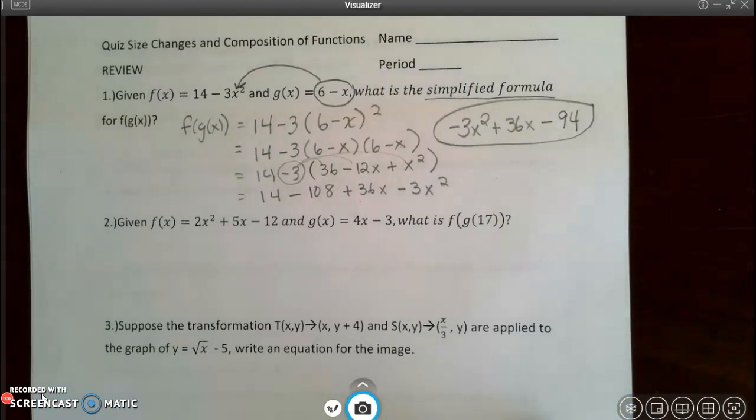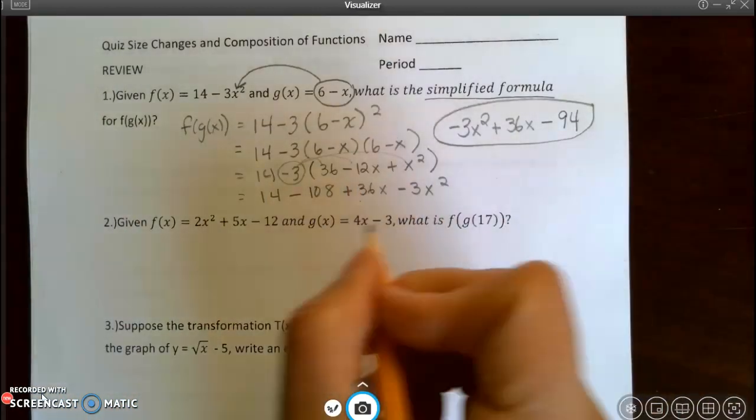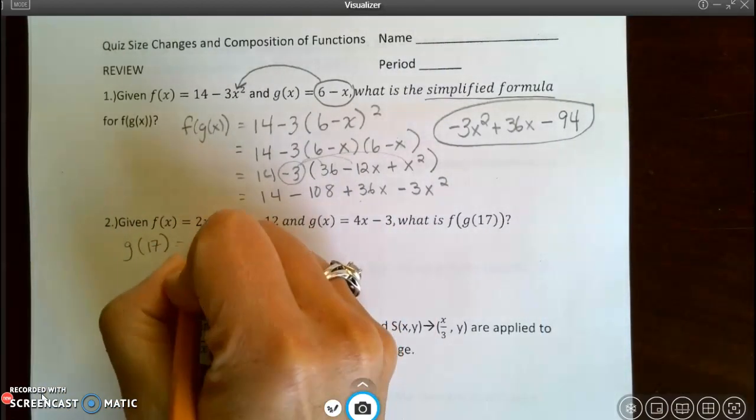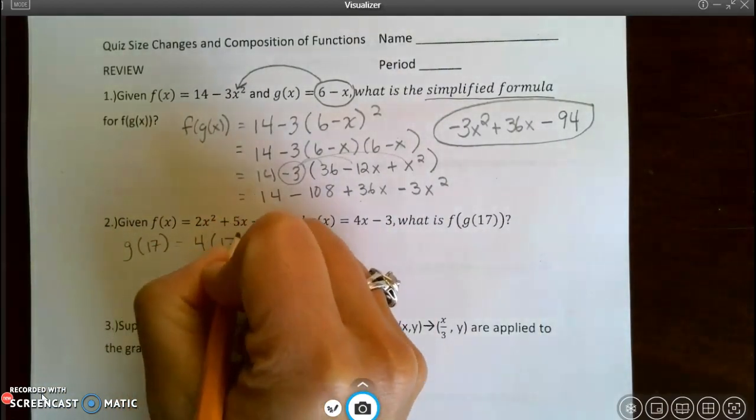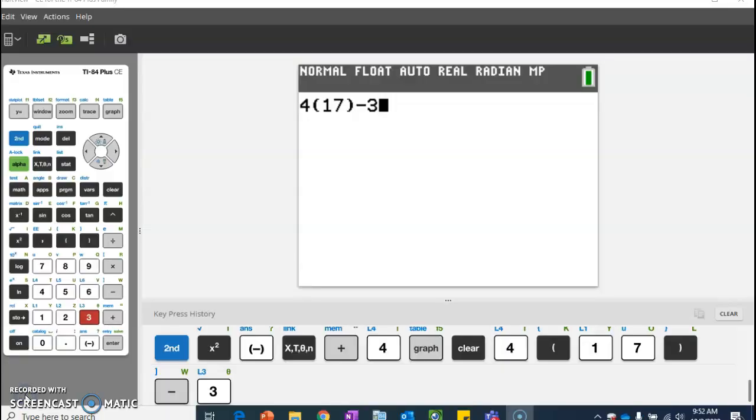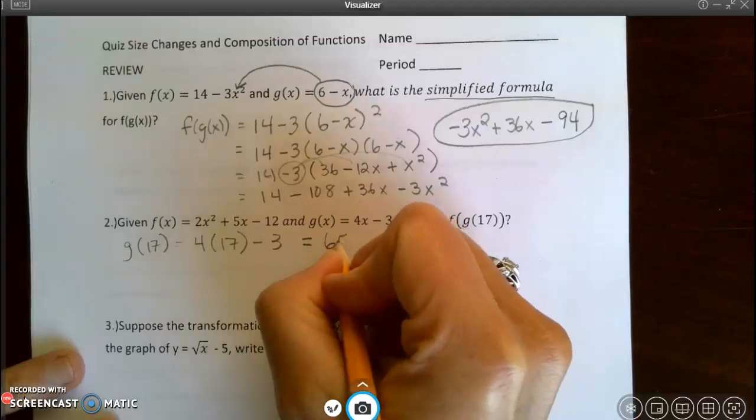Number two. Given that f(x) is 2x squared plus 5x minus 12, and g(x) is 4x minus 3, what is f at g at 17? So the first thing I'm going to do is start with g at 17. So that's going to be 4 times 17 minus 3. So I can use a calculator to do that. So I put this into my calculator and I get 65.